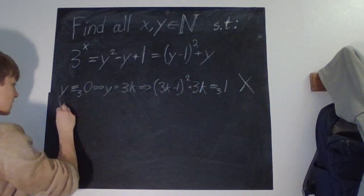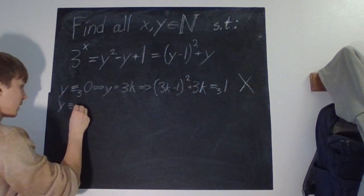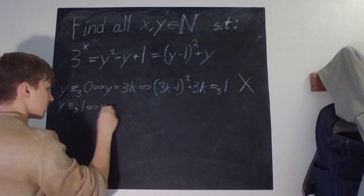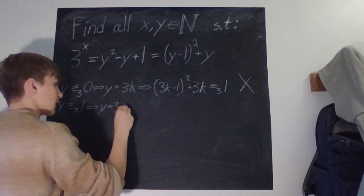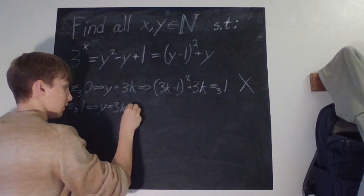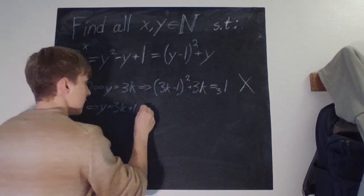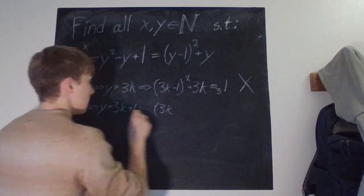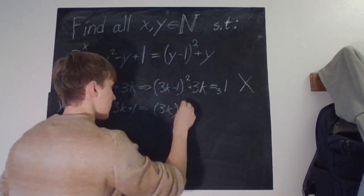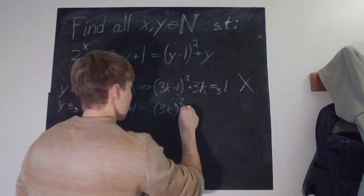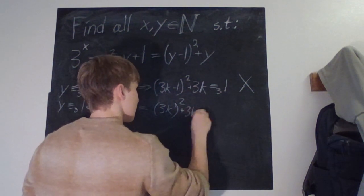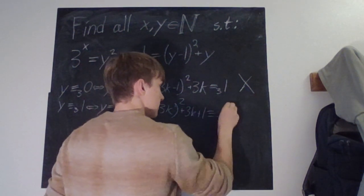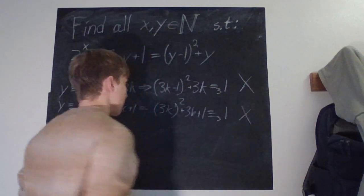So we have the next case, y modulo 3 is equal to 1. That is the same as saying that y is equal to 3k plus 1 for some integer k, which gives us 3k plus 1 minus 1, so we actually have 3k to the power of 2 plus 3k plus 1, which obviously modulo 3 is 1, so this does not work either.